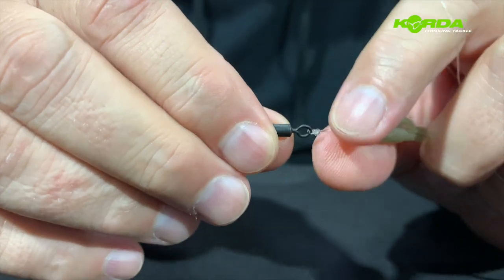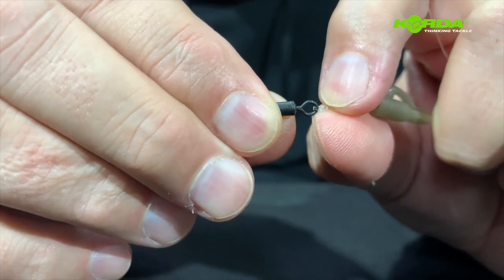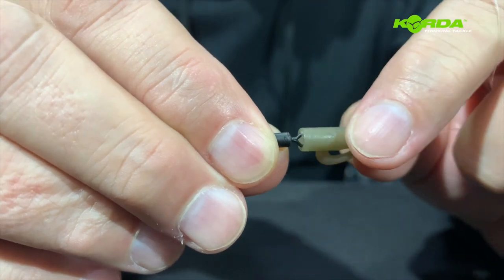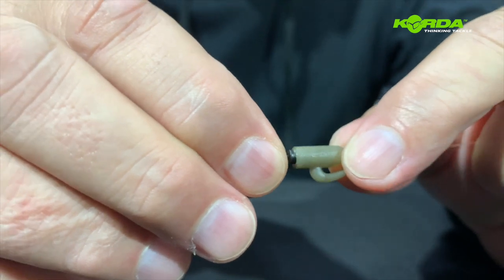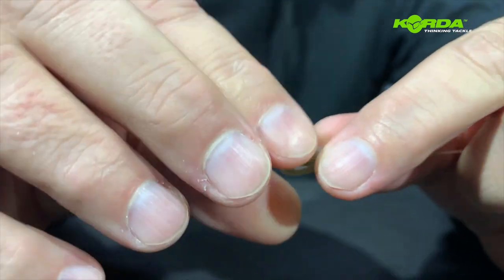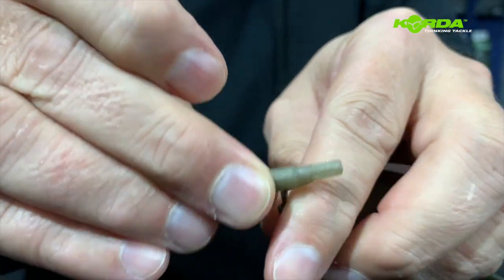You'll notice that I have flattened the eye of the swivel so that I can push this in and I've got a free running system. Now I can add the lead, pop the lead on.